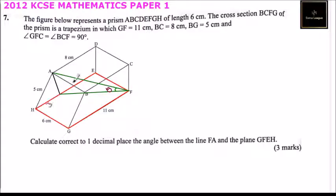Since GF and HE are equal, we can say this is three centimeters, and this line here is eight centimeters.